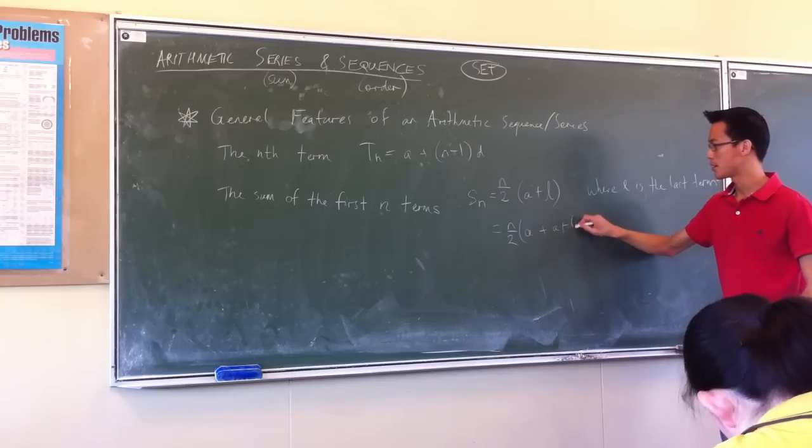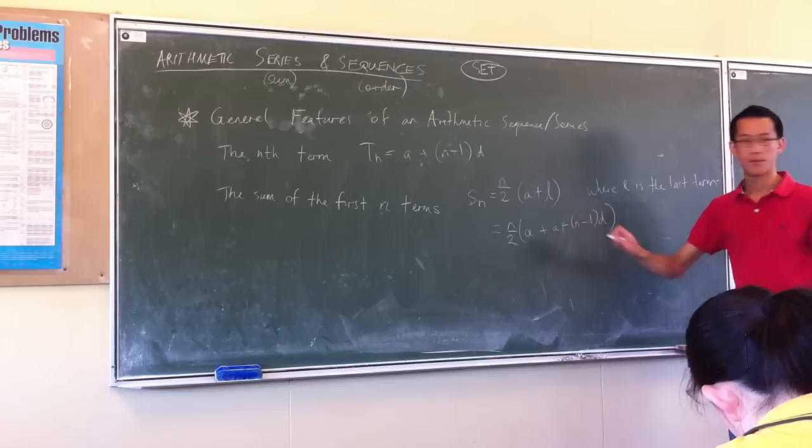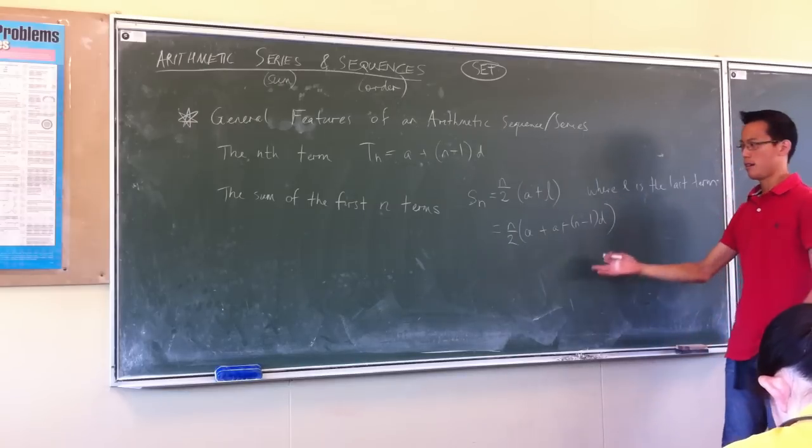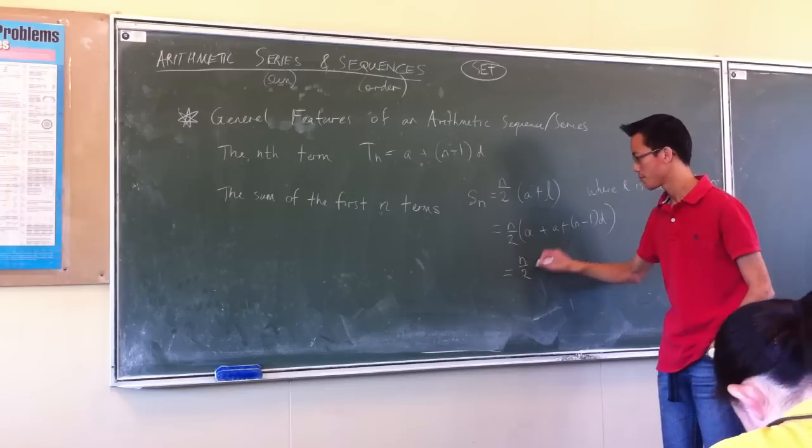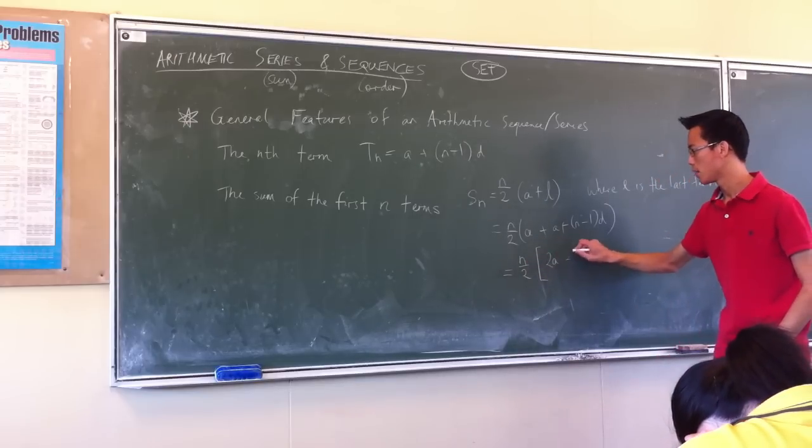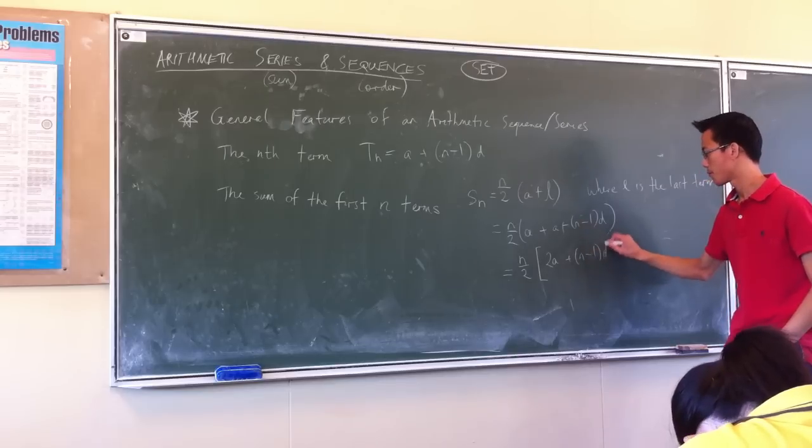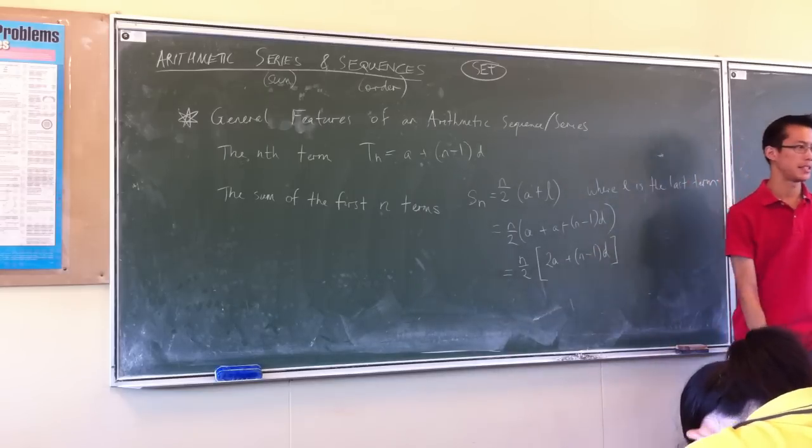So it should be a plus, again, n minus 1 lots of the difference. Okay? There's not much I can simplify apart from these a's, so I'll just chuck them together. 2a of 1. Ta-da! That's it.